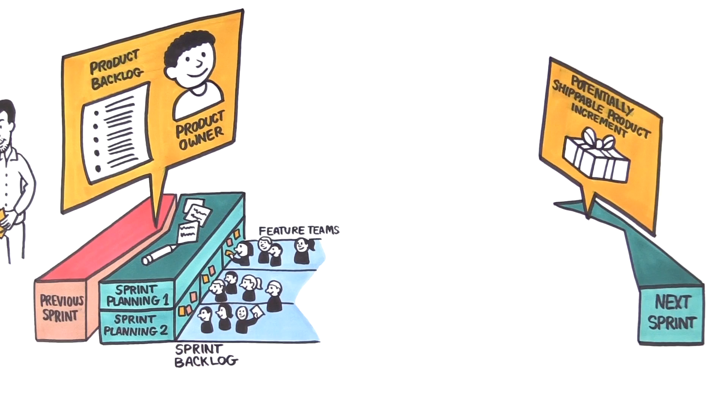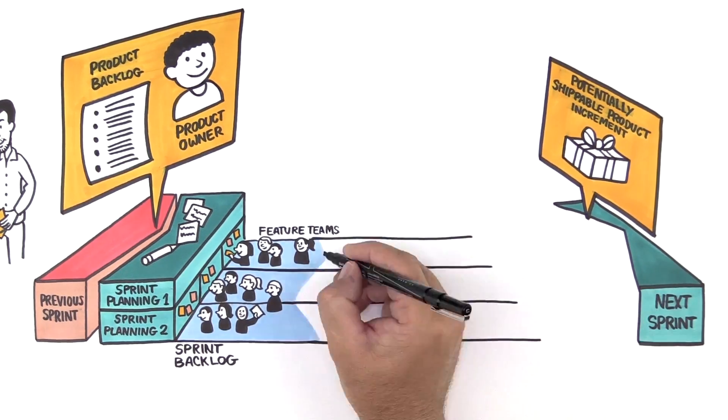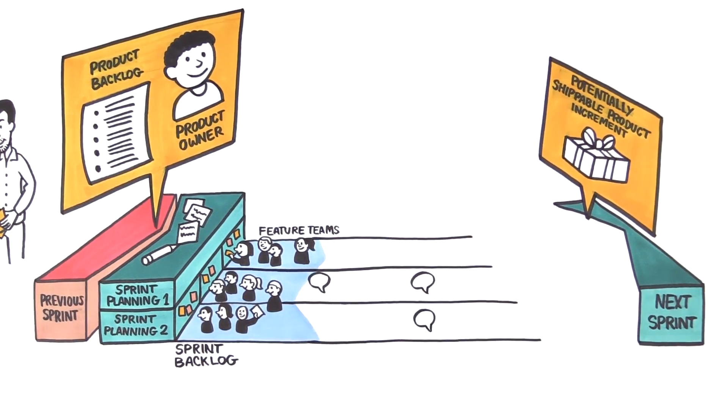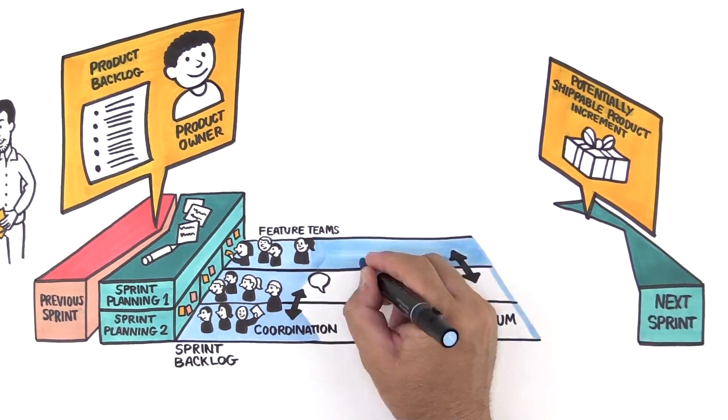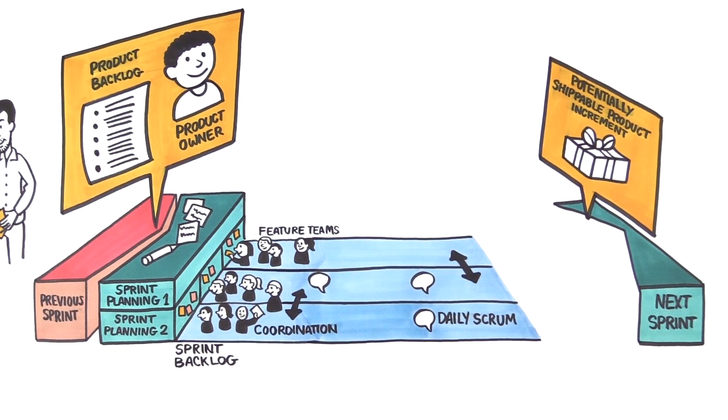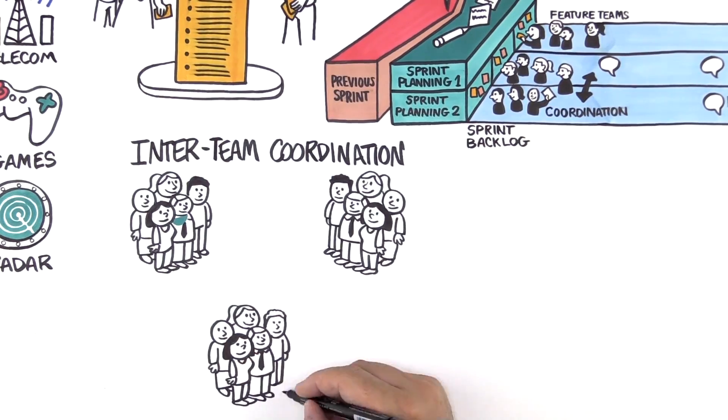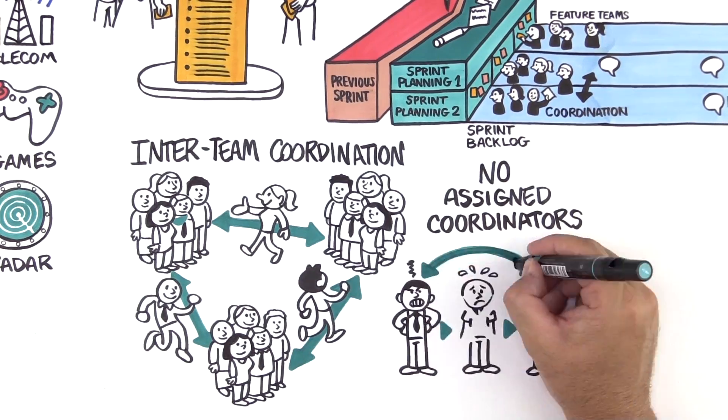Each self-managing team develops the features they selected while collaborating and continuously integrating with the other teams on the potentially shippable product increment. Coordination outside the team is now a team responsibility, so there are no assigned coordinators.